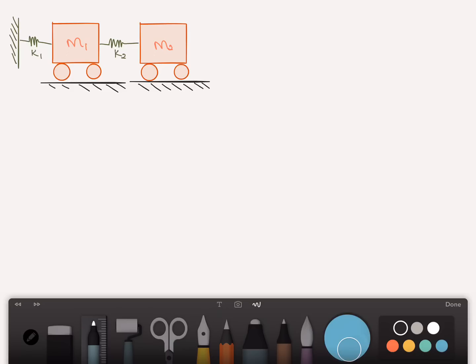So we have two masses M1 and M2 riding along a frictionless surface. The masses are connected to one another by a linear spring of constant K2 and mass one is connected to the wall with a spring of stiffness K1. Put in some coordinate systems here, so this will be X1 for mass one and this will be X2.